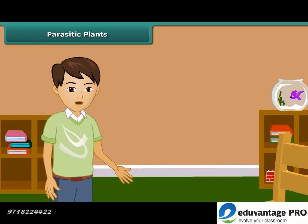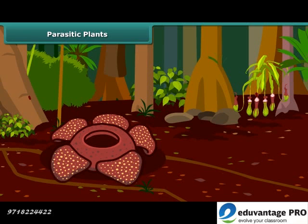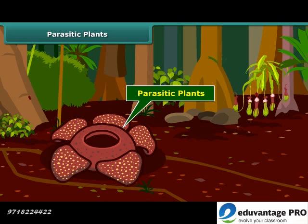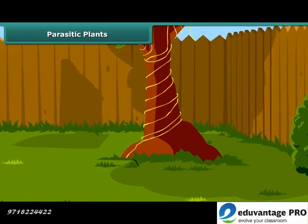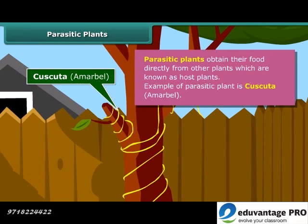Parasitic plants obtain their food directly from other plants, and those plants from which they obtain food are known as the host. Kaskata or Amarbele is an example of a parasitic plant. It coils around the stem and branches as a yellow tubular structure. It does not contain chlorophyll, so it takes ready-made food from the plant on which it is climbing, which is called the host.